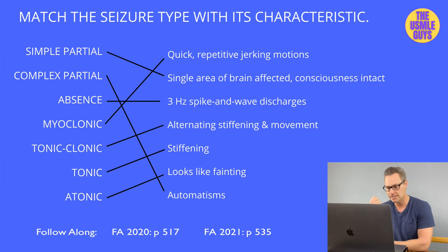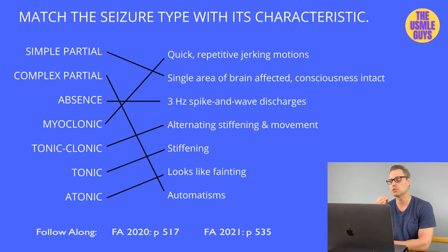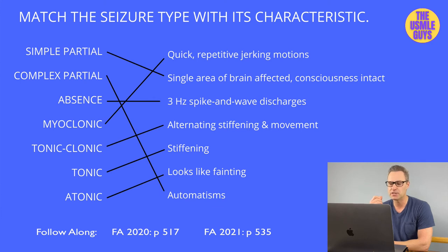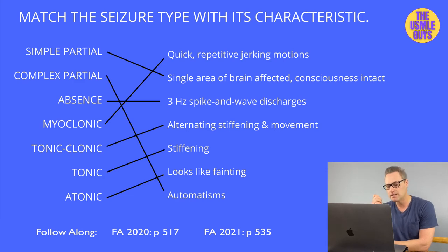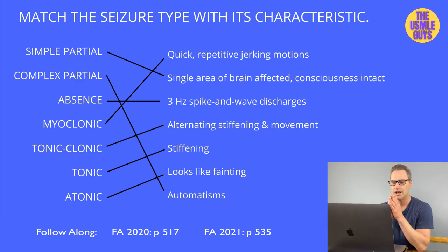Generalized seizures are diffuse in nature. The five main types for exam day are: absence seizure (also known as petit mal), myoclonic seizure, tonic-clonic seizure, tonic seizure, and atonic seizure. The absence seizure is associated with children who stare blankly into space for usually no more than 10 seconds, experience recurring episodes, and have no confusion afterward. On EEG it shows 3 Hz spike and wave discharges.